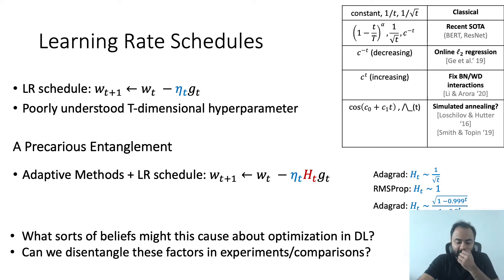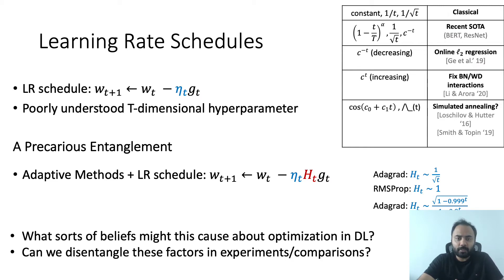The problem is made even more difficult when we consider adaptive optimizers, which precondition the gradient before executing a step. Learning rate schedules on top of these preconditioners, which is standard practice, now lead to a precarious entanglement where conditioning properties with respect to direction are heavily confounded with conditioning properties in terms of the learning rate.